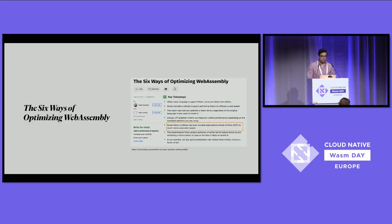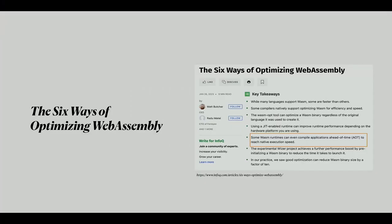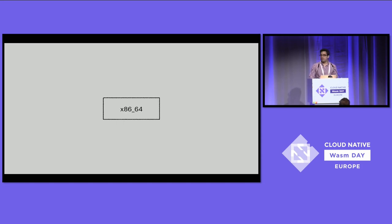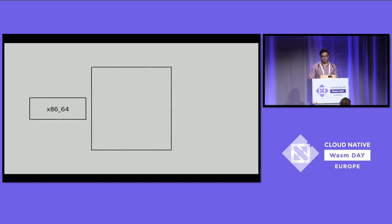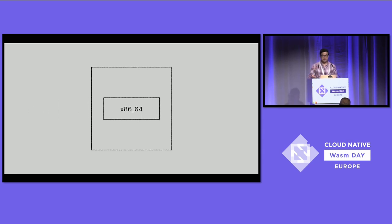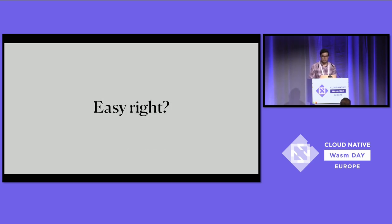The question still stands: do you need a baseline compiler or a new JIT? It depends. Radu and Matt from Fermyon have written an article called 'The Six Ways of Optimizing WebAssembly,' and one way is to ahead-of-time compile your code to your target architecture and then load it into your runtime, effectively skipping compilation time at startup. One could say, well, that's easy — why not just use that instead? And I think it depends on your architecture and needs.